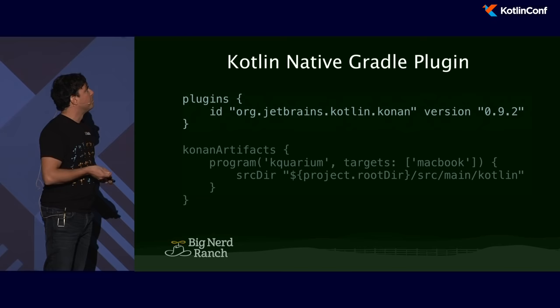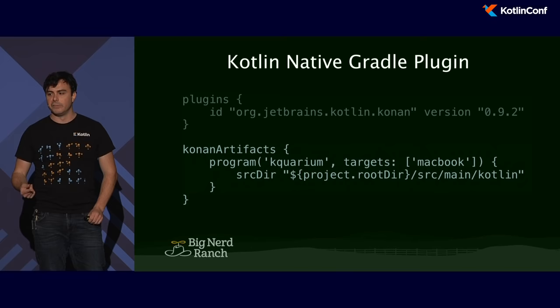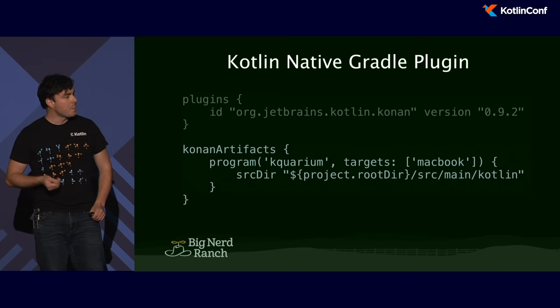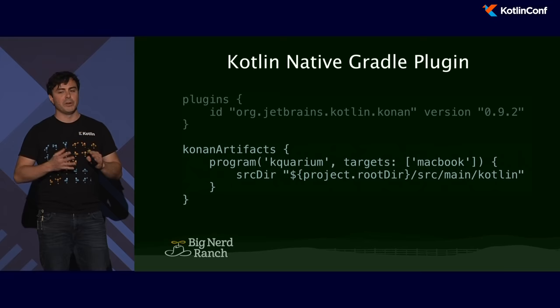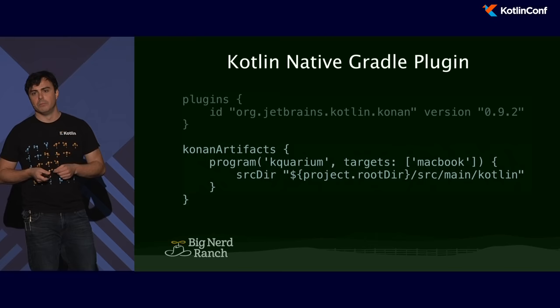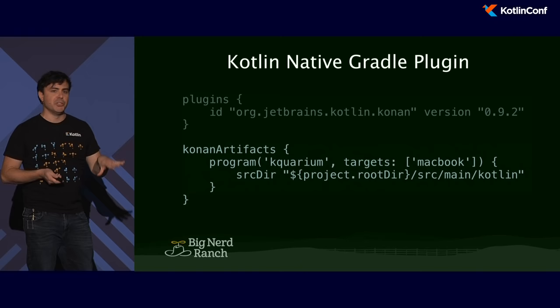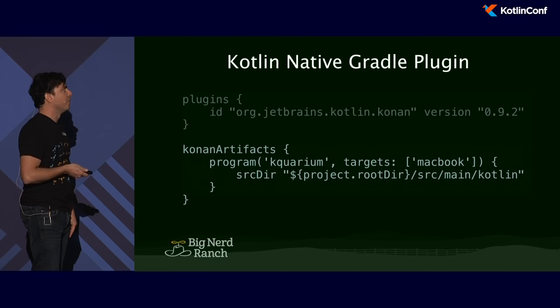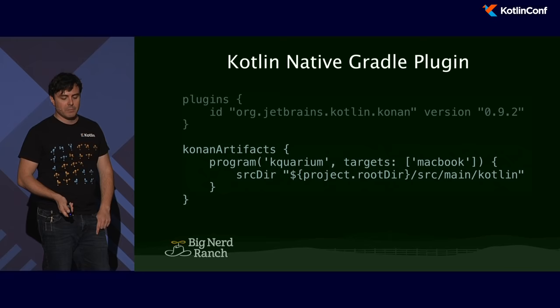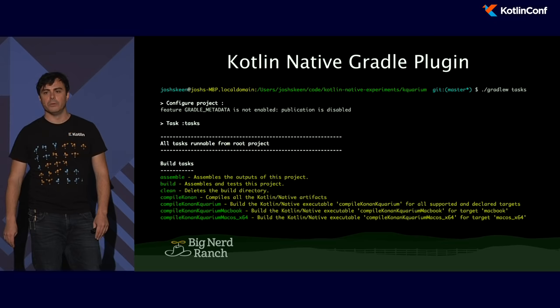Once I add this plugin, I can define my program. The build.gradle DSL makes it a lot easier to define what Konan C is going to do. It does change pretty frequently because Kotlin Native is still heavily under development. This should work with 0.9.2. All I'm saying here is I want to target the MacBook for the platform to compile for, and I'm going to name the binary I generate k-querium — a good name for an aquarium written with Kotlin Native.